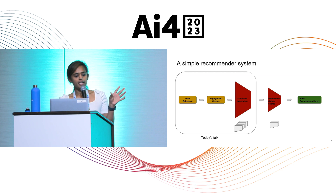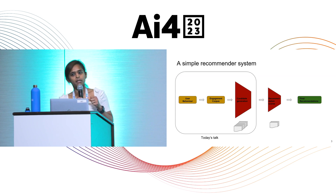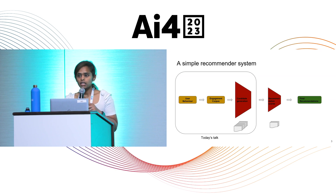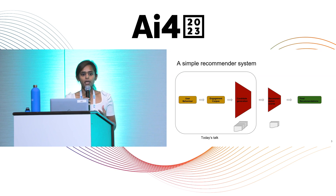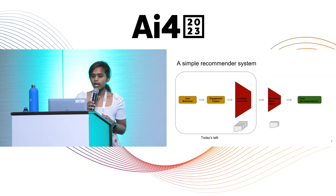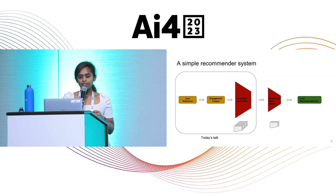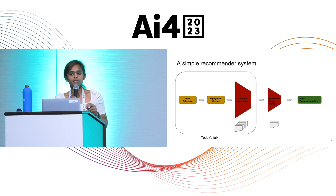It's basically user behavior data that we get. Think of you just typing queries on Amazon and then clicking on a bunch of products — that's pretty much the user behavior data that companies use. And then there's something called the engagement corpus, which is the structured format of this user behavior that is stored. This can be in the form of a graph, flat data, or textual data. We use algorithms to generate candidates for the next time users come to the recommender system.